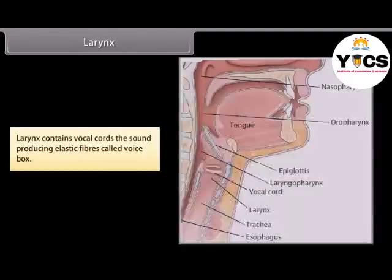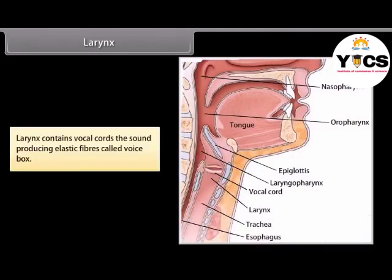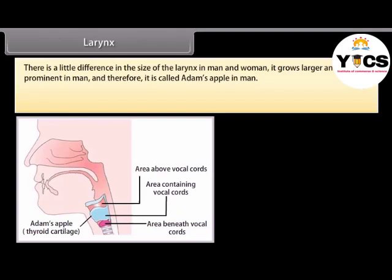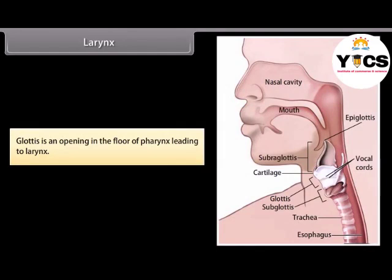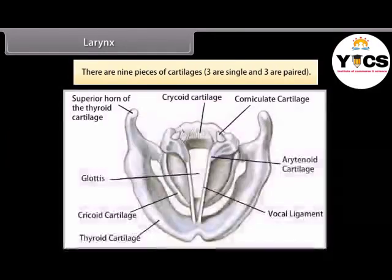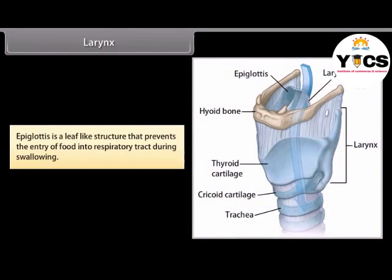The larynx contains vocal cords — sound-producing elastic fibers — and is called the voice box. There is a slight difference in the size of the larynx in men and women; it grows larger and becomes prominent in men, and is therefore called Adam's apple. The human larynx consists of glottis, cartilages, hyoid bone, thyroid membrane, vocal cords, and laryngeal ligaments and muscles. There are nine pieces of cartilage — three are single and three are paired. Epiglottis is a leaf-like structure that prevents entry of food into the respiratory tract during swallowing.